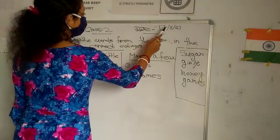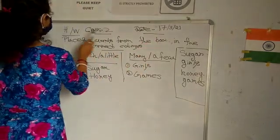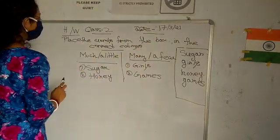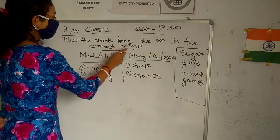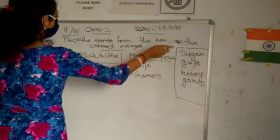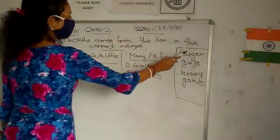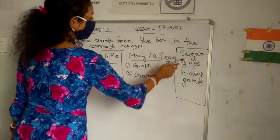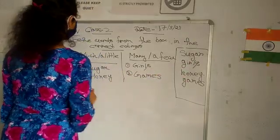Good morning students. Today is 17 March 2021 and this is the class 2 homework class. Today's homework is: place the words from the box in the correct columns. The words are sugar, girls, honey and beans.